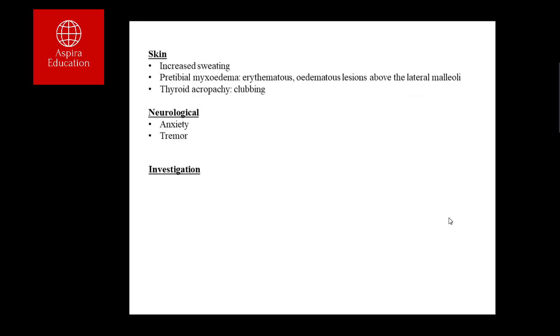Patients can have pre-tibial myxoedema, an erythematous and oedematous lesion typically over the lateral malleolus or shin. Do not confuse this with myxoedema, which is seen in severe hypothyroidism — pre-tibial myxoedema is specific to thyrotoxicosis. Patients can also have thyroid acropathy, which is clubbing of the fingers. Neurological symptoms include anxiety and fine tremor of the hands.